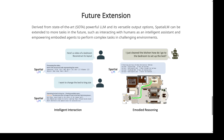To recap: the key innovation in Spatial LM is the integration of large language models, which allows for a level of semantic understanding that was previously impossible — and it all works with readily available visual data like videos from our phones. It's already enabling exciting applications in indoor navigation, augmented reality, architectural planning, and robotics. This technology has the potential to fundamentally change how we interact with computers and with the physical world. Thanks for joining us — keep exploring, keep learning, and keep pushing the boundaries of what's possible.